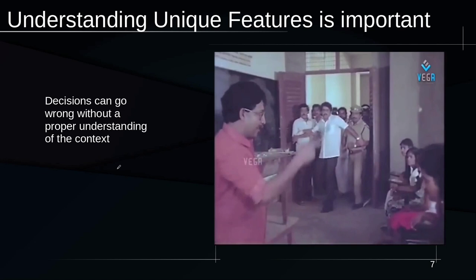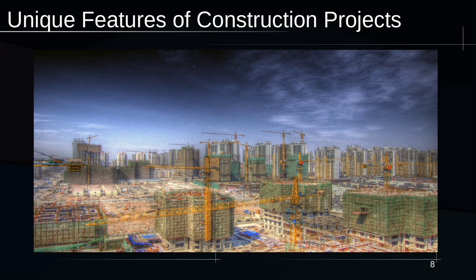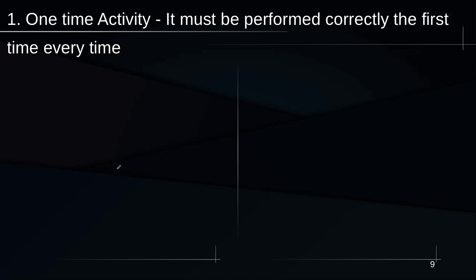Now let's understand the unique features of construction projects. We will discuss nine unique features one by one. The first one is: it's a one-time activity and it must be performed correctly the first time, every time.